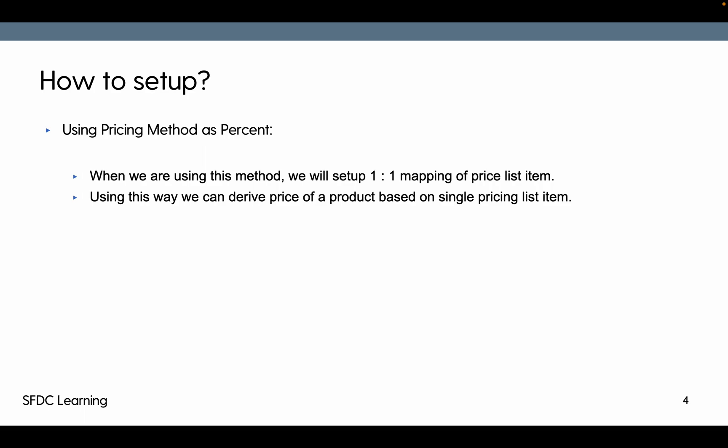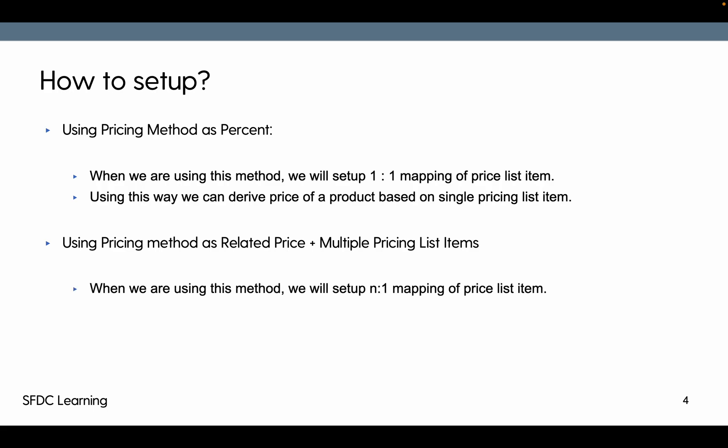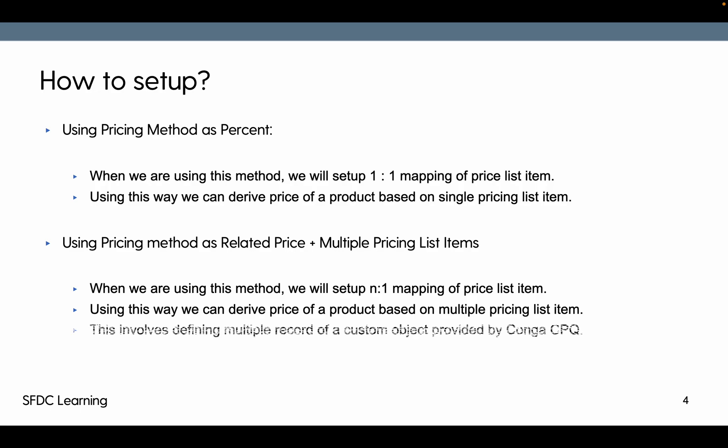The second method is using price method as 'Related Price' with multiple price list item associations. With this method, one product's price can be derived from multiple products. This way we can derive a product's price based on multiple price list items — called related price list items — which involves defining multiple records of a custom object provided by Conga CPQ.